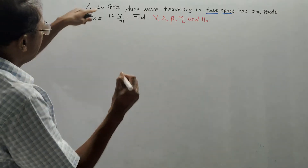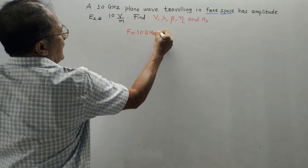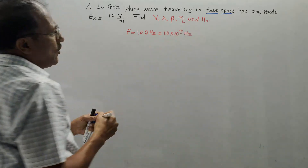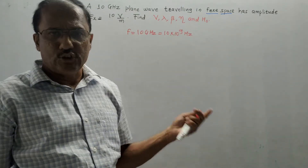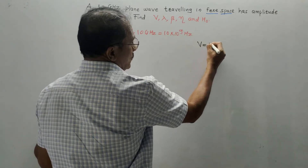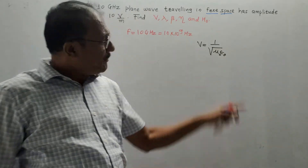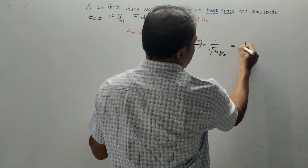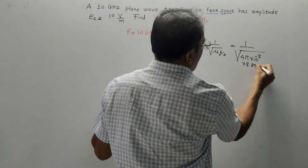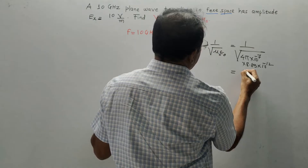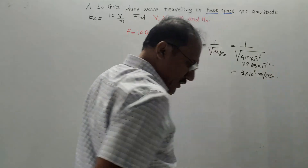First part: calculate velocity of propagation. We know that in free space, velocity of propagation is 3 × 10^8 meters per second. The formula is 1 upon square root of mu_0 epsilon_0. Putting the values — mu_0 is 4π × 10^(-7) and epsilon_0 is 8.854 × 10^(-12) — if you simplify this, the answer is 3 × 10^8 meters per second.